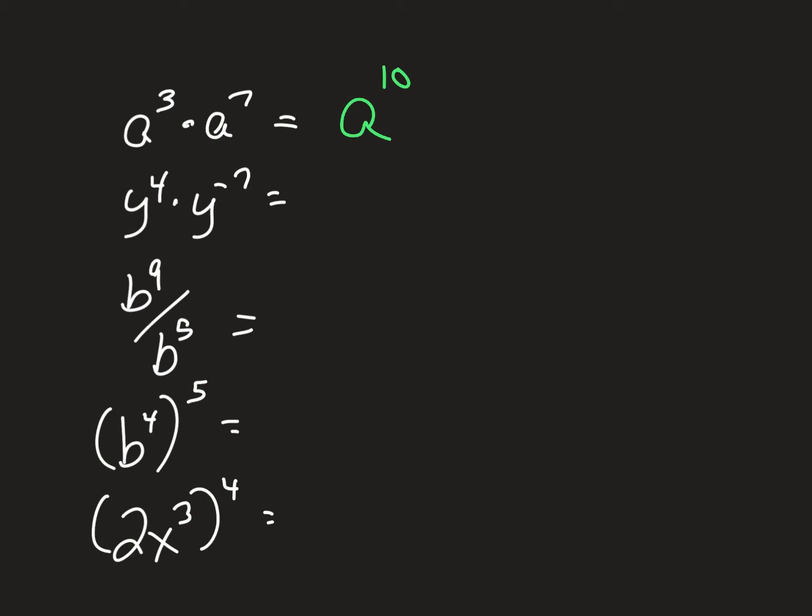Second one, again, add the exponents. You get y to the negative three. However, don't forget what a negative exponent does. It flips it. It becomes one over y cubed.